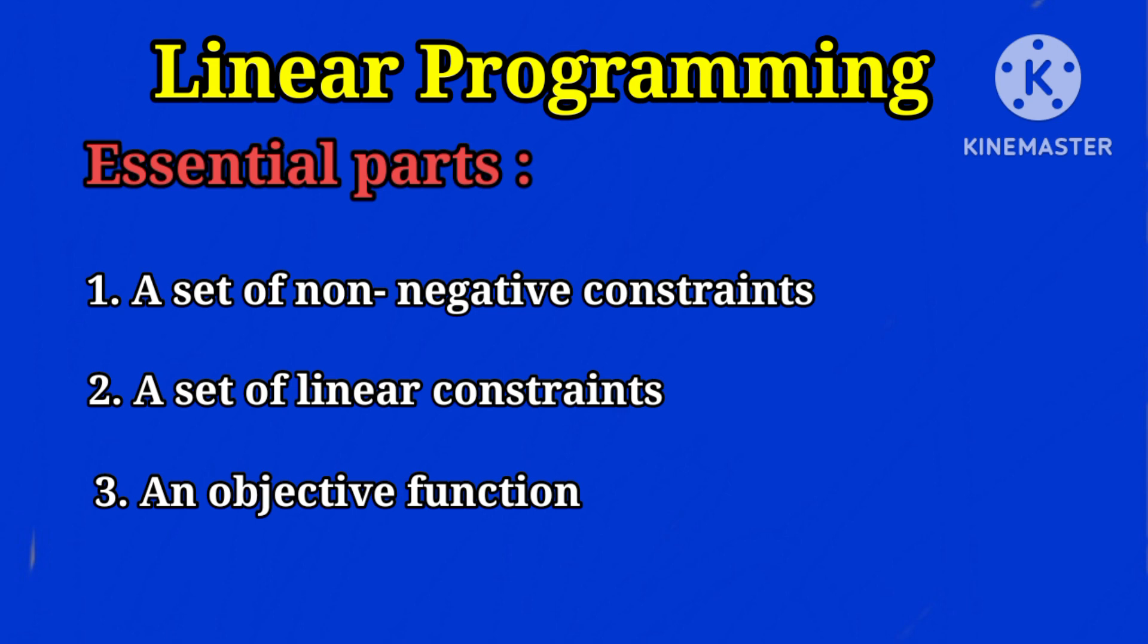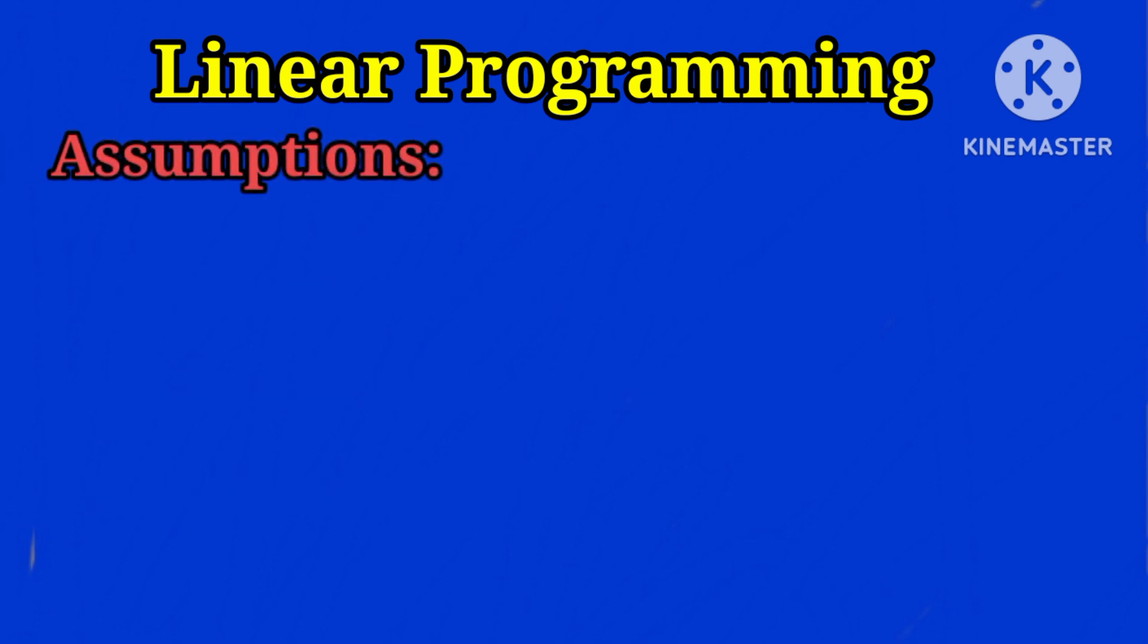Next, we'll discuss the assumptions of linear programming. First is linearity. The objective function to be optimized and the constraints involve only linear relations. They should be linear in their variables.